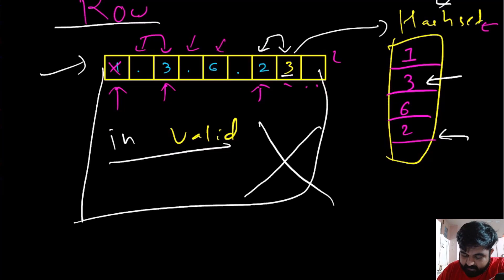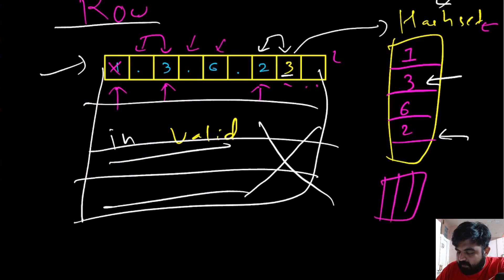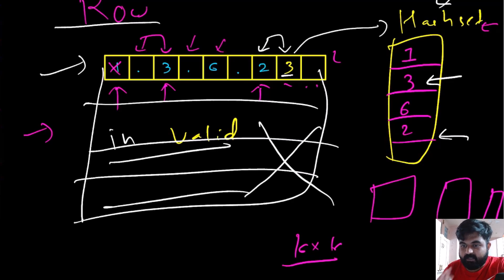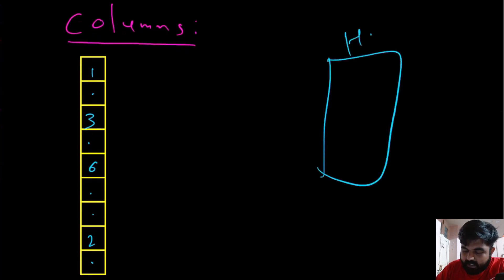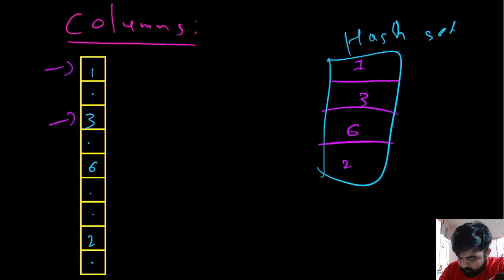For nine different rows, we would create nine different hash sets and repeat the same process for each one. The same way we solved for rows, we can solve for columns — again creating a hash set and applying the same logic. We iterate through the column, adding entries for one, three, six, and two, reaching the end without duplicates. If two values in a column are the same, we catch it and call the board invalid.